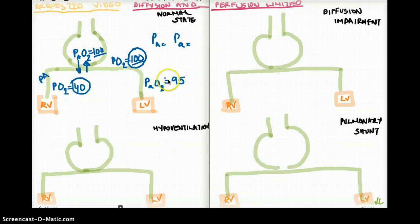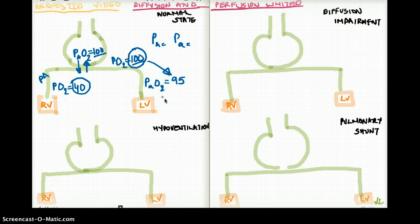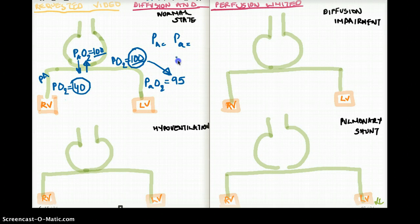But as soon as this reaches the systemic circulation, there is going to be a little bit of drop from 100 to 95. And the reason for that is because it's reaching blood where there is a little bit more carbon dioxide than the one that's just coming from the lungs. As a result, there is a little bit of drop. Usually the drop is about 5 to 10 millimeter mercury, not more than that, 10 being the lowest region. So this is how alveolar ventilation works in a normal state.